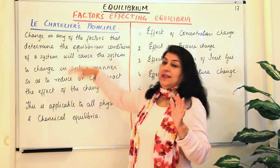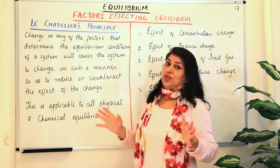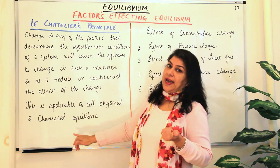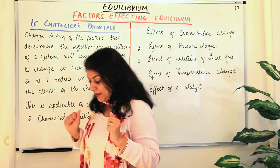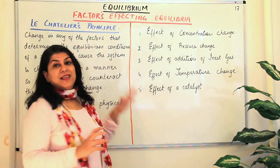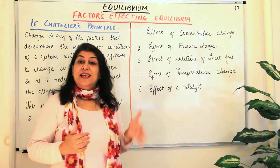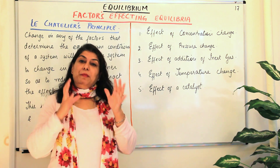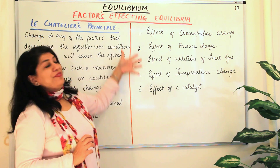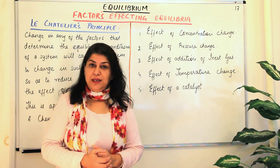Le Chatelier's principle is applicable to all kinds of reactions and all kinds of equilibria — both physical equilibria and chemical equilibria. Now, what are these factors that affect chemical equilibrium? In the consecutive videos we are going to study each of these in detail, but right now let me just give you a synopsis. These are five factors which may affect chemical equilibrium.